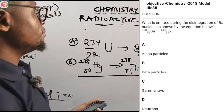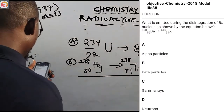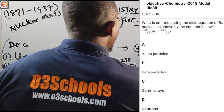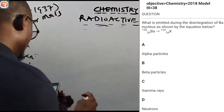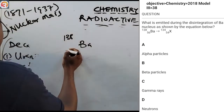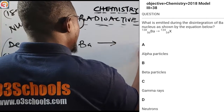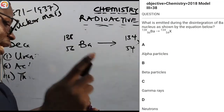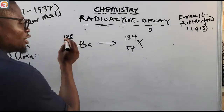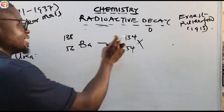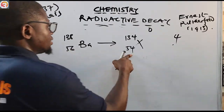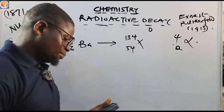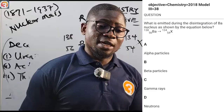2018 Question 38: What is emitted during the disintegration of a Barium nucleus as shown by the equation ¹³⁸₅₆Ba → ¹³⁴₅₄X? Look at the nuclear mass: it changed from 138 to 134, a reduction of 4. The nuclear charge changed from 56 to 54, a difference of 2. A reduction of 4 in mass and 2 in charge means an alpha particle was emitted. The correct answer is alpha particle.